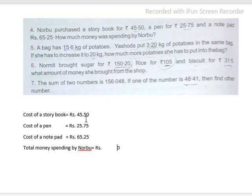Continuing the addition: 1, 7, 8, 9, 10 — carry 1. Then 5, 15 — carry 1. Note the decimal point position. Next column: 5, 10, 15, 1 carry — giving 16.